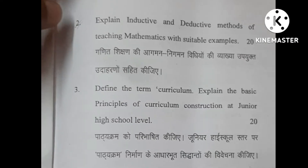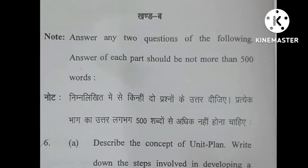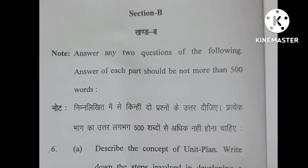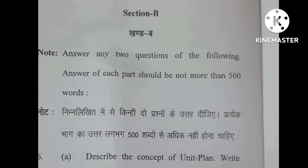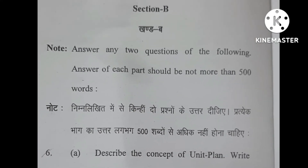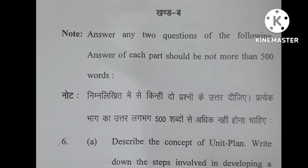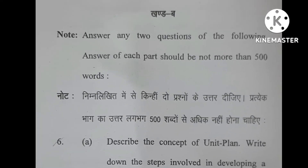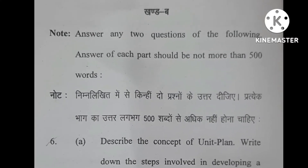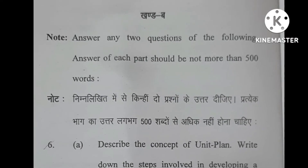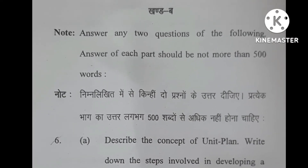Section B starts here. Answers in this section have to be written in 500 words. Question six has two subsections, A and B, and carries 10 marks — so you don't need to spend a lot of time on it. The first part asks you to describe the concept of a unit plan and write down the steps involved in developing a unit plan.